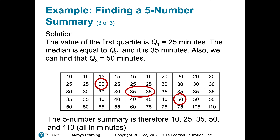Then we find the median of all the numbers below that 35, and the median of all the numbers above 35. Going back to the string analogy — when we make the middle cut, the cut of the lower piece is the center of that remaining piece. The value 25, circled on your screen, is the median of the lower piece of data, giving us Q1 = 25. So our five-number summary is: minimum 10, Q1 = 25, median Q2 = 35, Q3 = 50, and maximum 110.